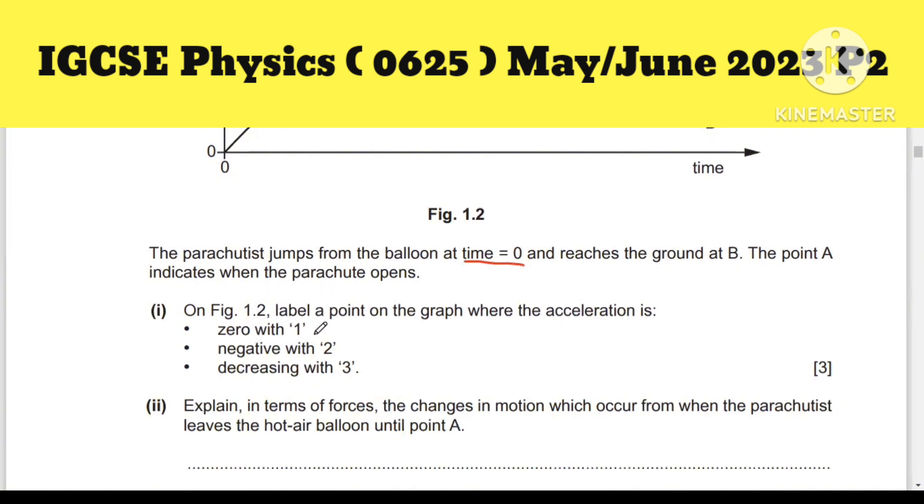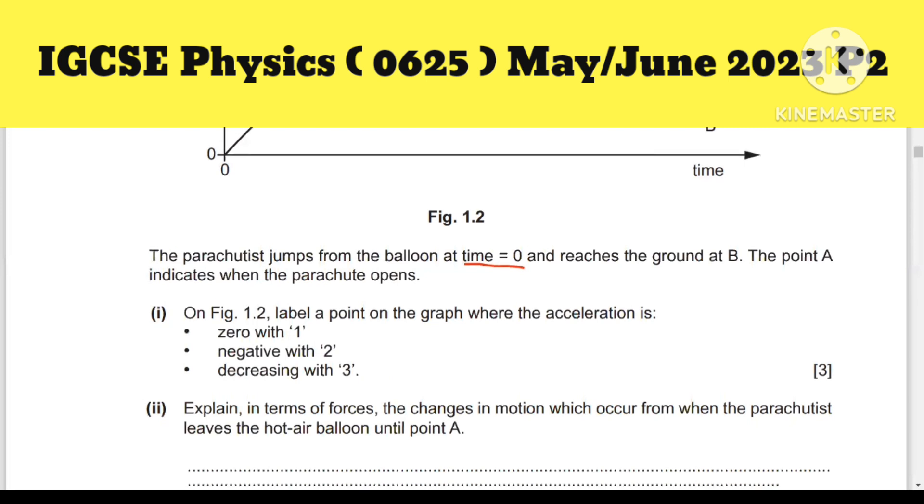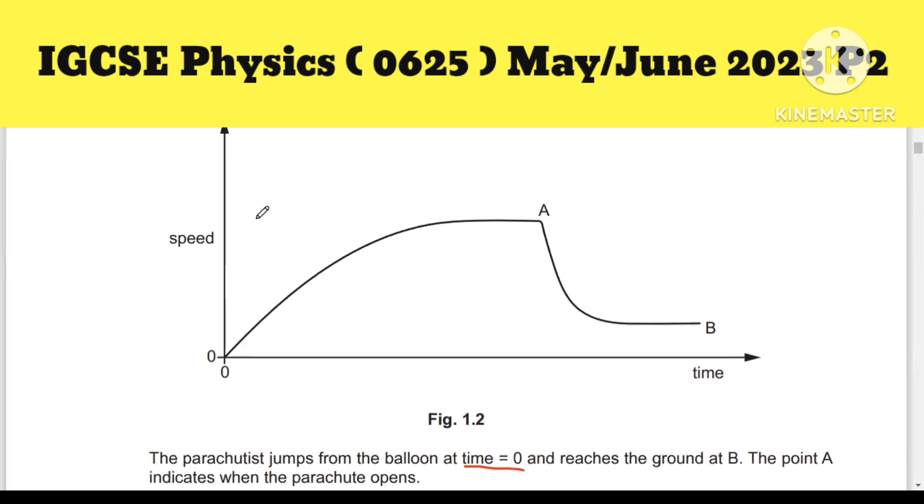On Figure 1.2, label a point on the graph where acceleration is zero with 1, negative with 2, and decreasing with 3. On the diagram, we have to mark three points: 1, 2, and 3 for zero, negative, and decreasing acceleration respectively. This line is straight and parallel to the time axis, so at this point acceleration will be zero, which is 1.